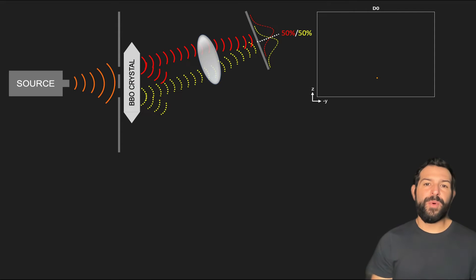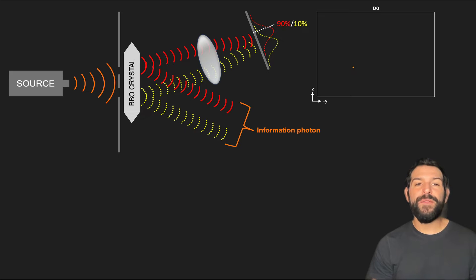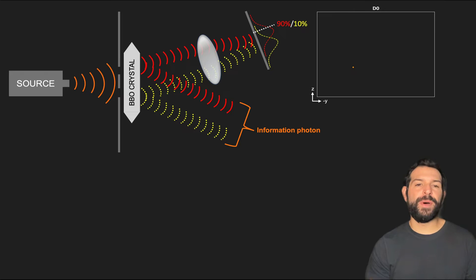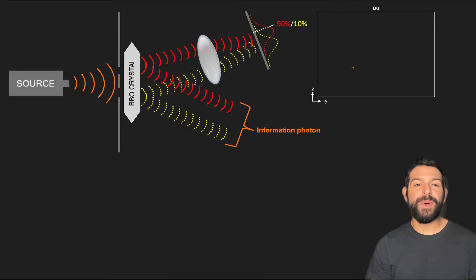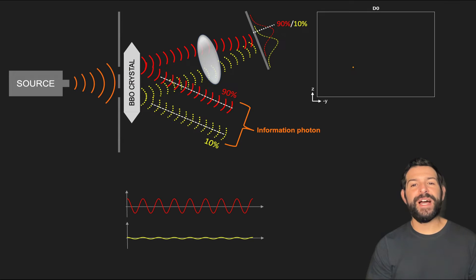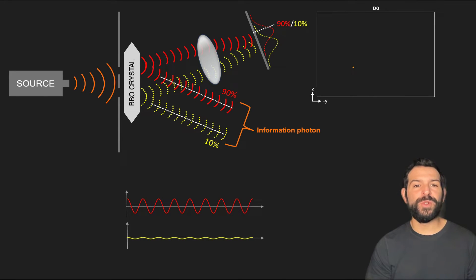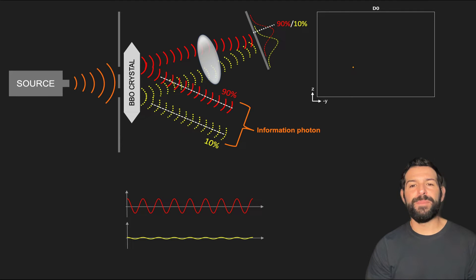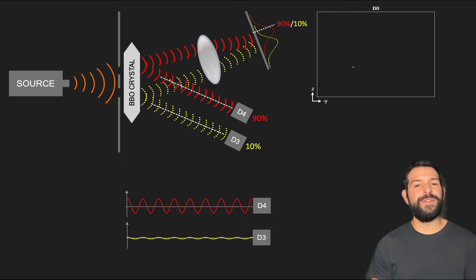Now if at this point the information photon hasn't been measured, then its wave function will still remain in a superposition of coming from the top slit or the bottom slit. But due to entanglement, its corresponding probability amplitudes are now determined by where in D0 the screen photon was localized. Therefore it is the landing position on the screen what fully determines the probabilities of measuring the information photon at D3 or D4.